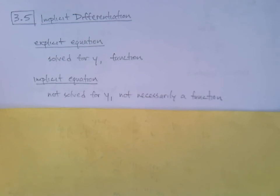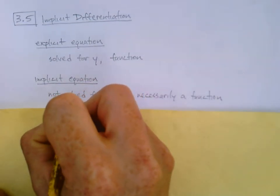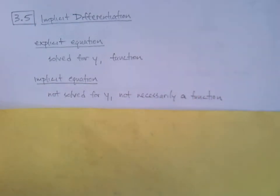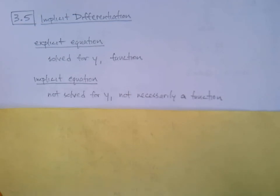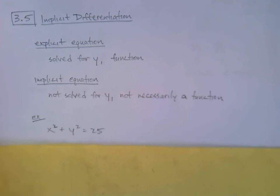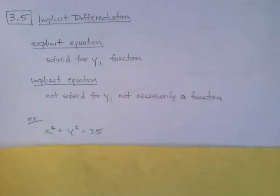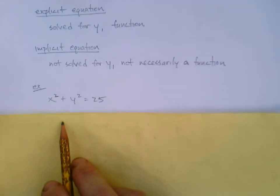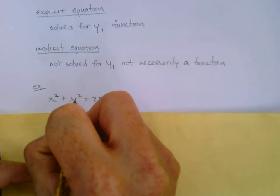An implicit equation is just the opposite of an explicit equation — it has not been solved for y. It will have x's and y's in it, but y is not isolated. It's not necessarily a function. A classic example we've seen before is x squared plus y squared equals 25.